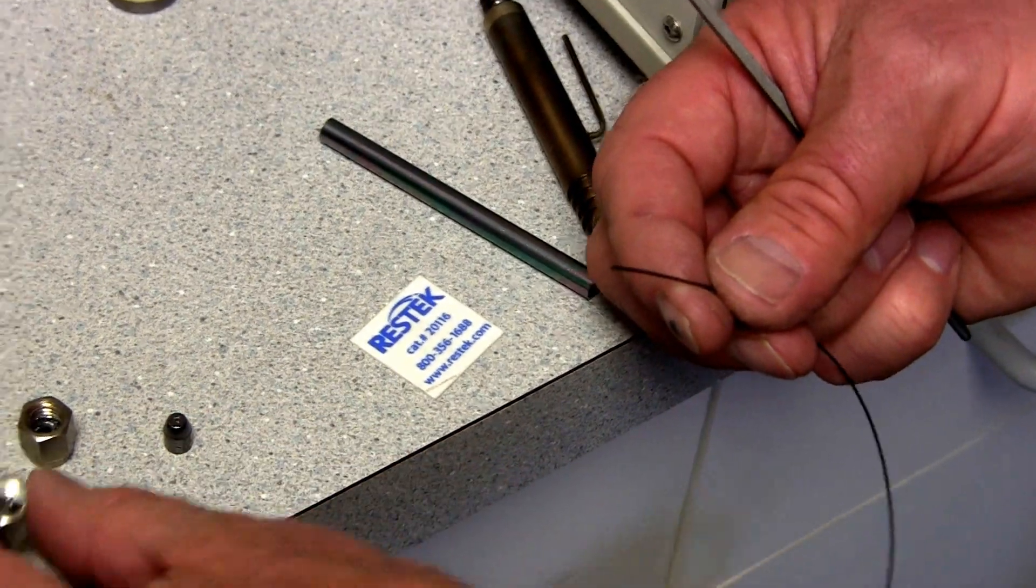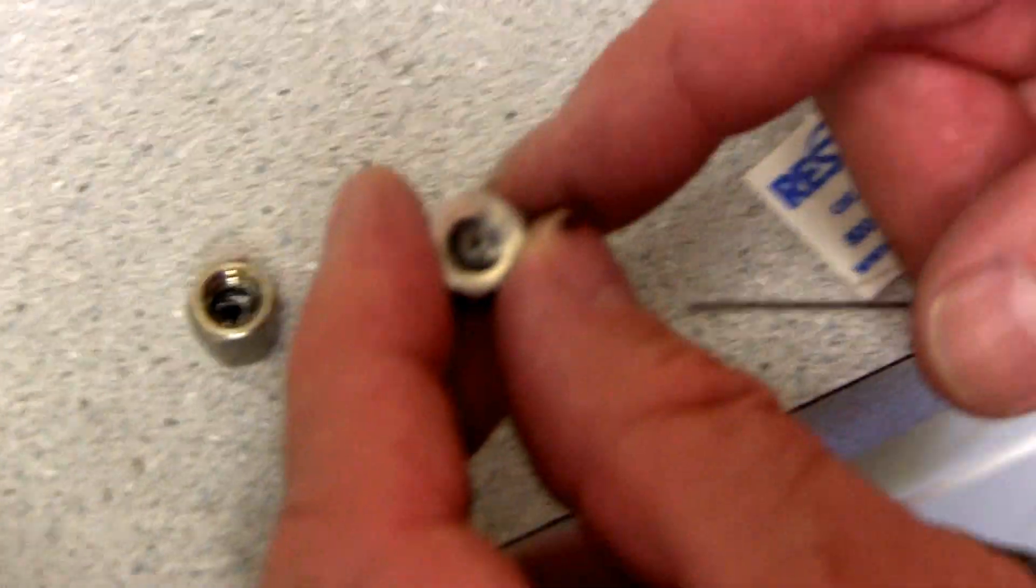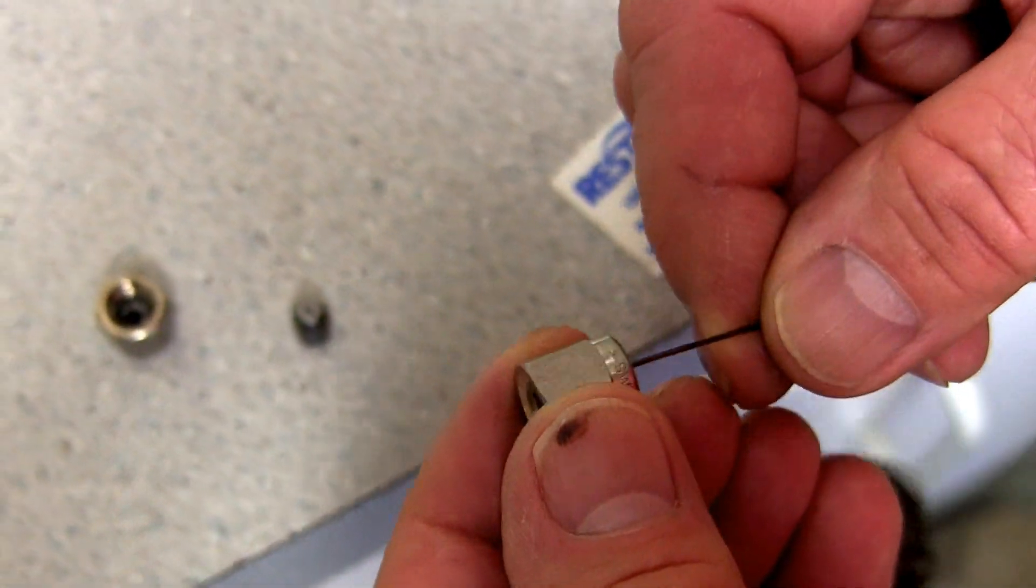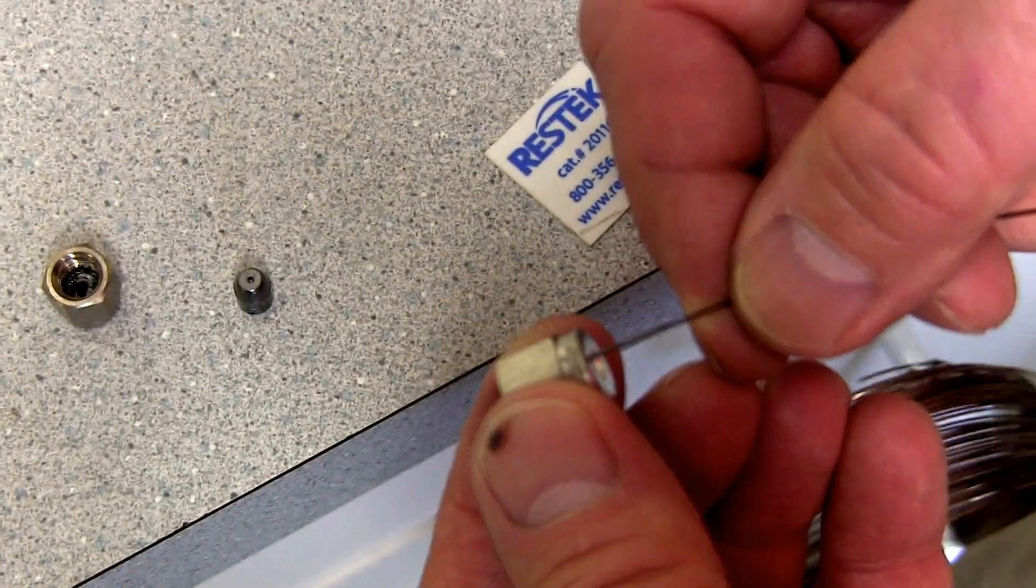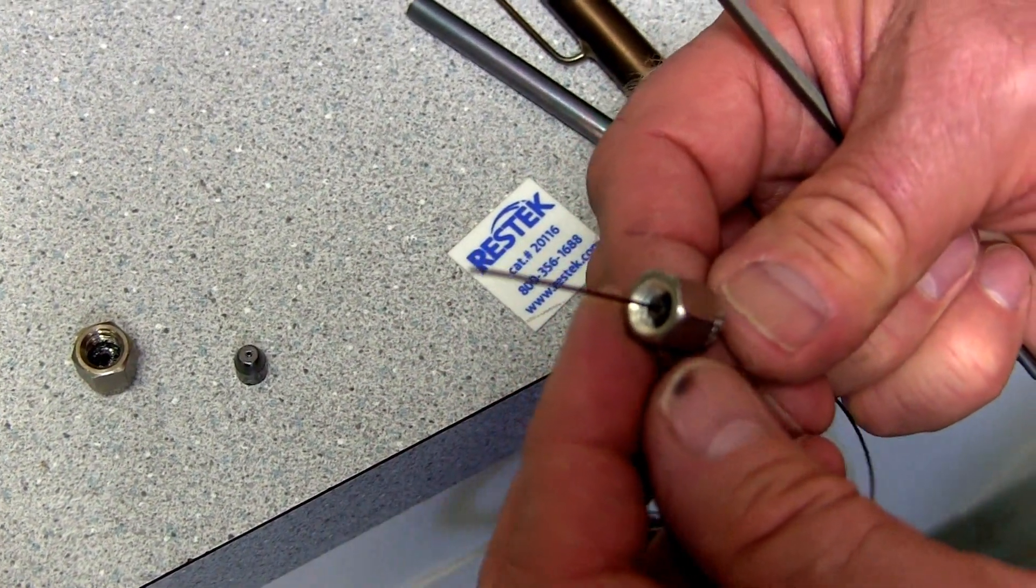This is still usable. When the graphite ferrule inside the nut looks like that, it looks like it's still got the conical shape, then it's still fine to use. Sometimes you can get 10, 20, even more uses out of a ferrule before they get damaged.